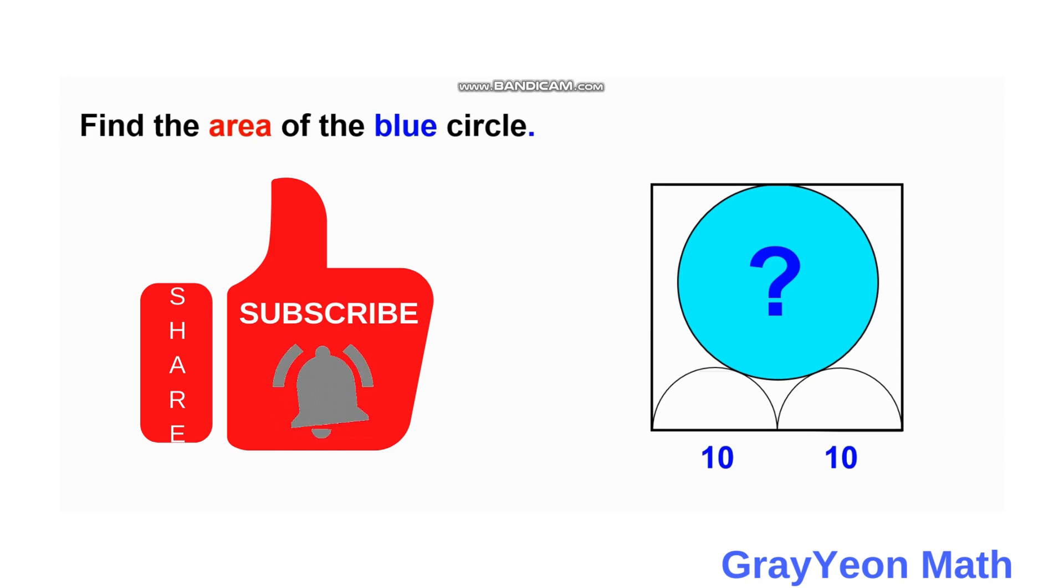is a blue circle and above the blue circle are two semicircles with diameters of 10 units each. They are all inscribed in this square and we are required to find the area of the blue circle.